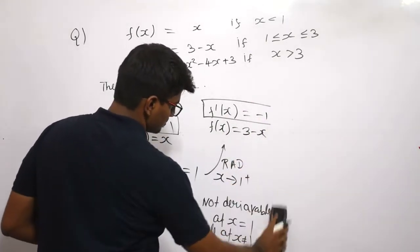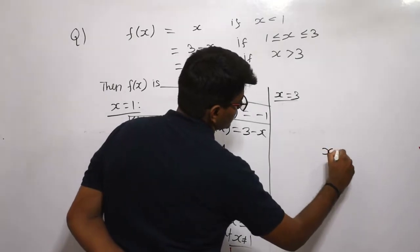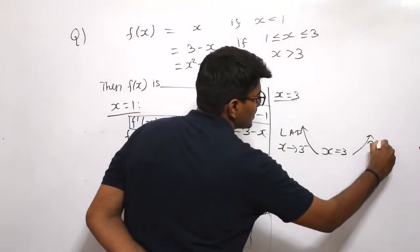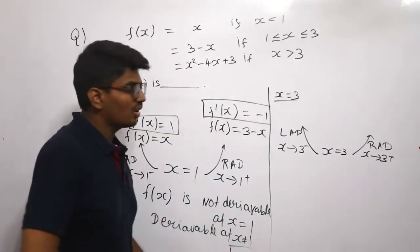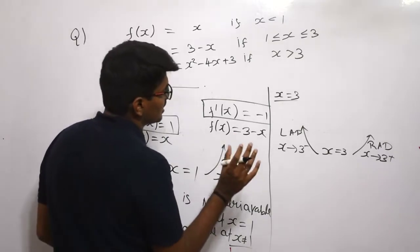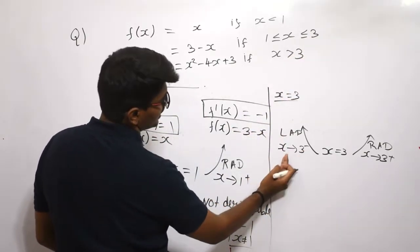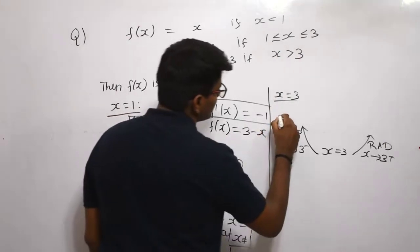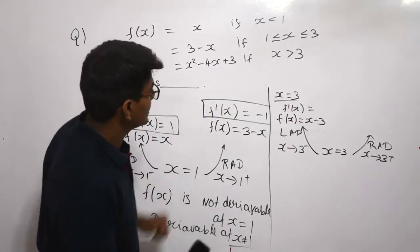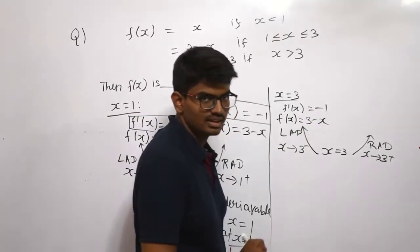Now for the second condition, x = 3. We need to find left and right-hand derivatives at x = 3. For x tending to 3⁻, x is just below 3, which lies in the range 1 to 3, so f(x) = 3 − x and f'(x) = −1.